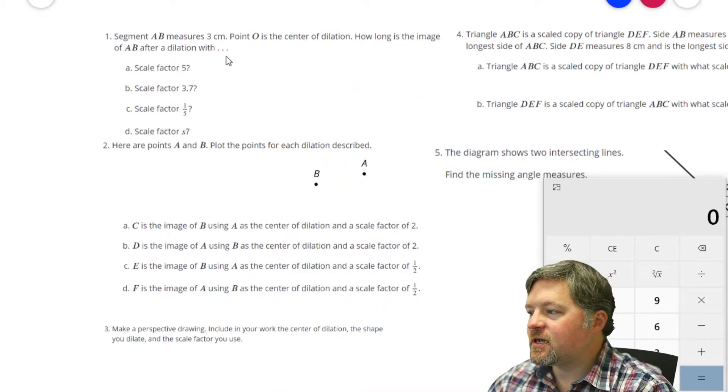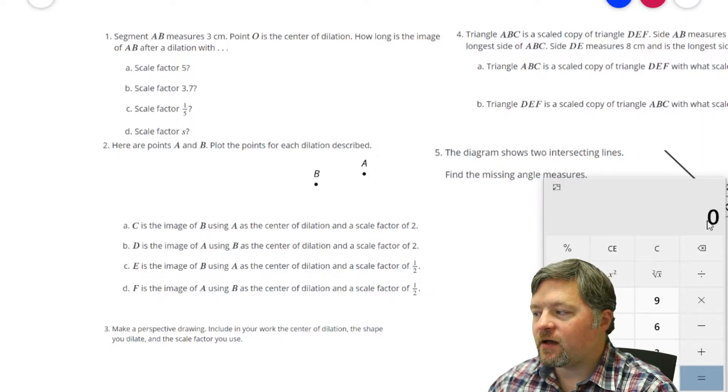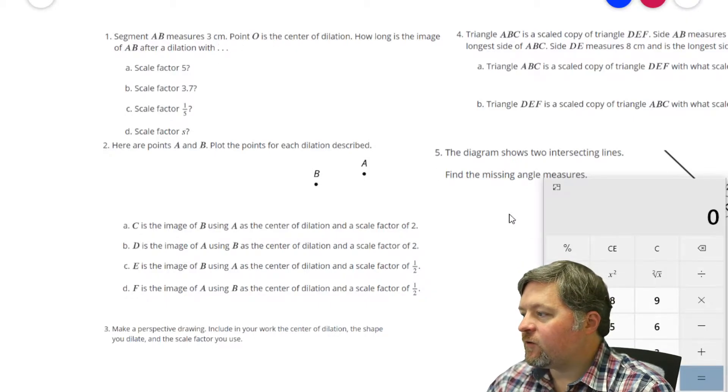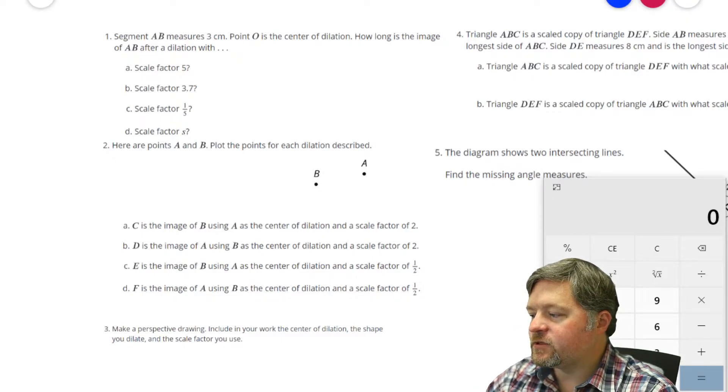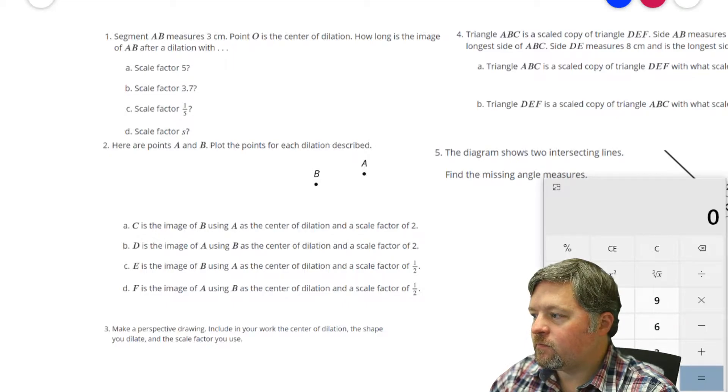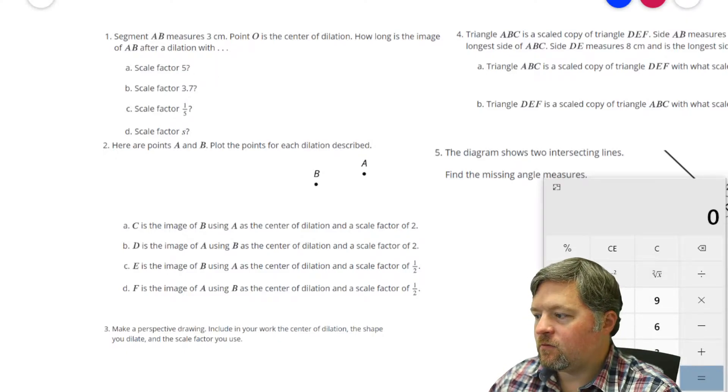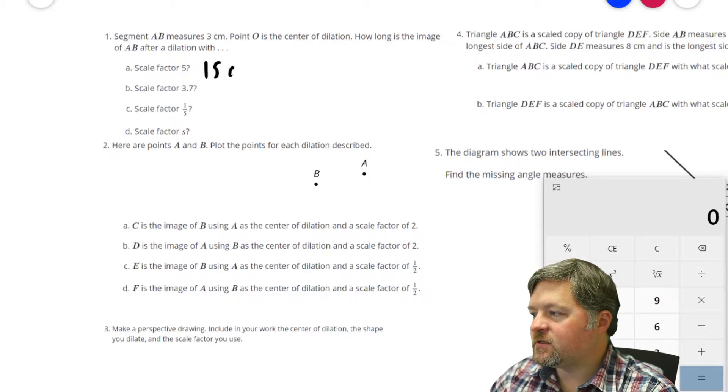Our first question here says, Segment AB measures 3 centimeters. Point O is the center of dilation. How long is the image of AB after a dilation with a scale factor of 5? Well, a scale factor of 5 means if it was 3 centimeters, it will be 3 times 5. 15 centimeters.